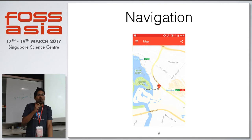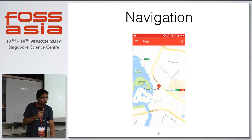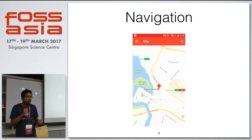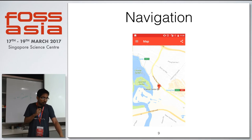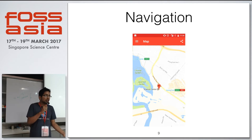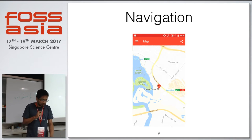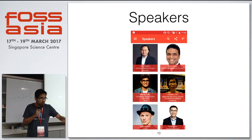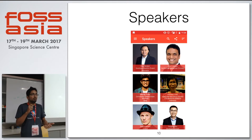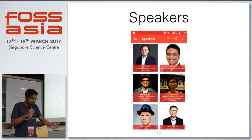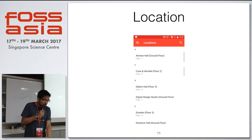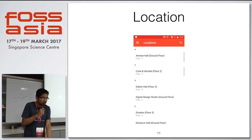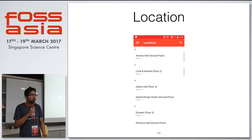Next up is navigation. This is not available in the F-Droid variant, but in the Google Play variant you'll be able to navigate using Google Maps. You can also see all the speakers in one place — that's present in the web app too. You can see sessions by location names. I'll be giving a demo with my phone, so that'll be a bit more clear on what I'm talking about.